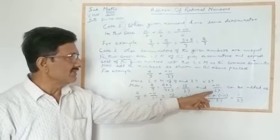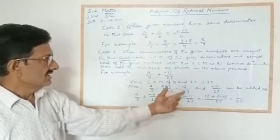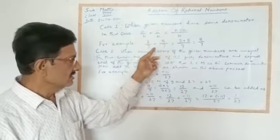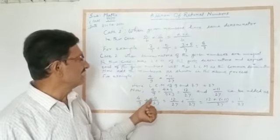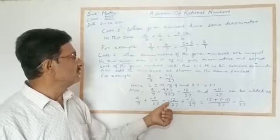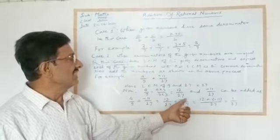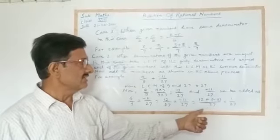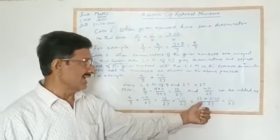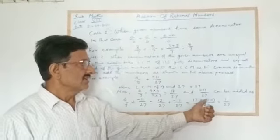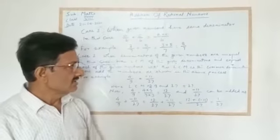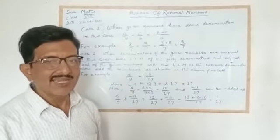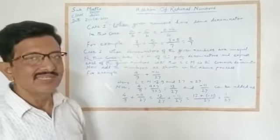The second number is −11/27. So these two numbers can now be added the same way as shown in example one. Thus, 4/9 + (−11/27) equals 12/27 + (−11/27). The LCM is naturally 27, and we add the numerators according to their signs: 12 + (−11) = 1. So the result is 1/27. In this manner, we can add any rational numbers having different denominators.